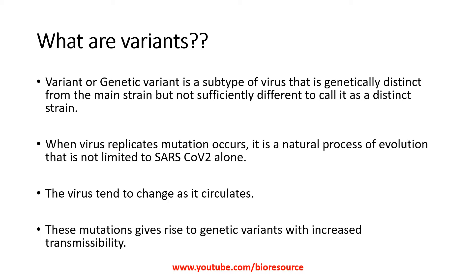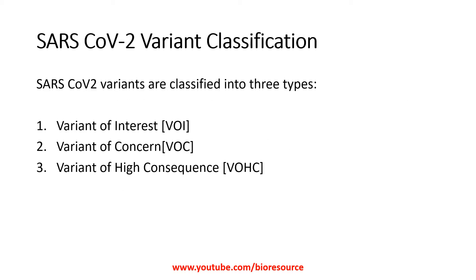The SARS-CoV-2 variant classification has three types: Variant of Interest, Variant of Concern, and Variant of High Consequence. Let's see each one in detail.